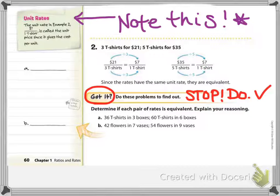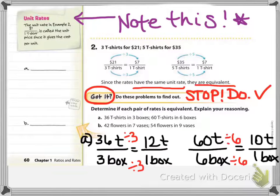21 divided by 3 would leave you with $7 per t-shirt. $35...